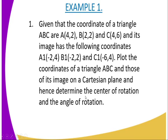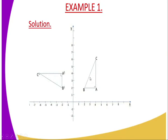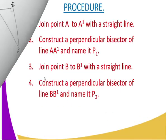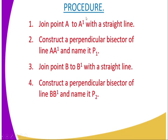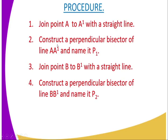The first part of the question we have dealt with because we have already plotted — the object is here and the image is here. Then after that you are supposed to follow this procedure so that you can determine the center of rotation. You are supposed to join point A to its image A1 with a straight line, then from there construct a perpendicular bisector.